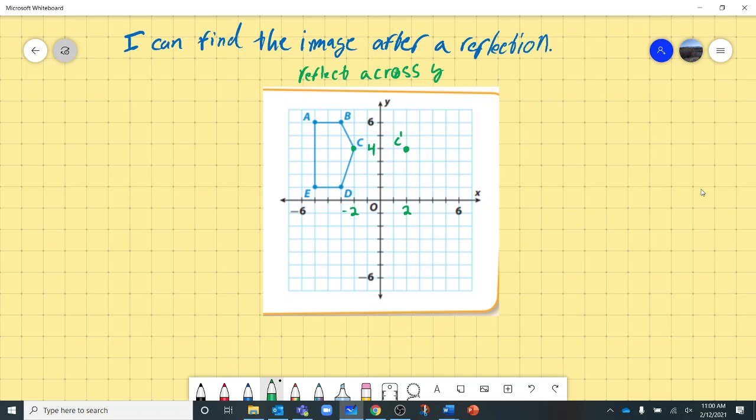We'll just go next to B. So my B looks to be negative 3, positive 6. So I'm going to go to positive 3, positive 6. And hopefully you start to see a pattern in what we're doing with our X coordinates.